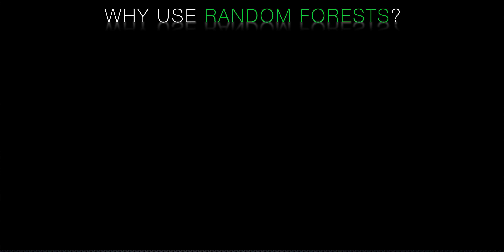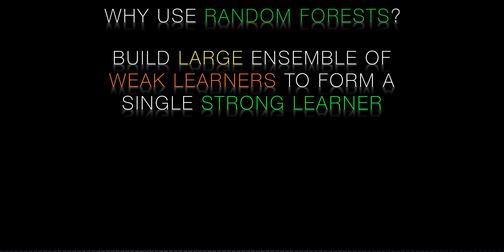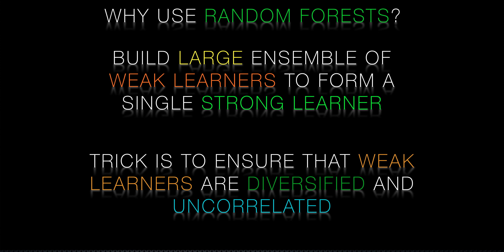So why use random forests? The simple reason is to build a large — indeed very large — number of weak learners and aggregate their results to form an extremely strong learner. If the weak learners are highly correlated then this is not likely to end well. The key trick in developing a random forest is to shuffle the training data a little per tree and per split of each tree where new branches are created.